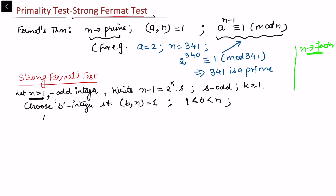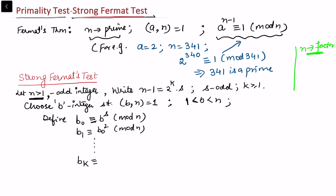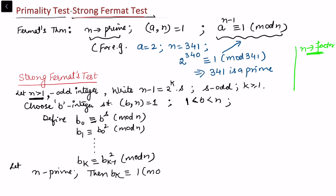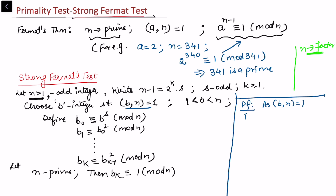We define a sequence: b₀ ≡ b^s mod n, b₁ ≡ b₀² mod n, and continuing this way we get bₖ ≡ bₖ₋₁² mod n. If n is prime, then bₖ ≡ 1 mod n. To see this in the proof: since GCD(b, n) = 1, by Fermat's theorem we know that b^(n-1) ≡ 1 mod n.